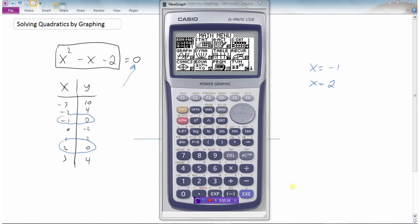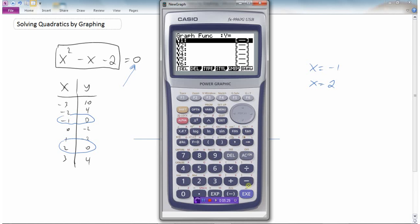So here's my graphing calculator. And I'm going to go to graph here. And I'm going to enter the equation y equals x squared. So this is the variable button here, x theta t. It'll show up as x, x squared minus x minus 2. And it's drawn that graph, the same one that we did here.